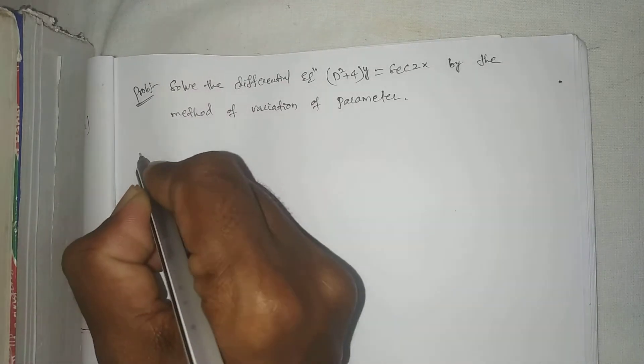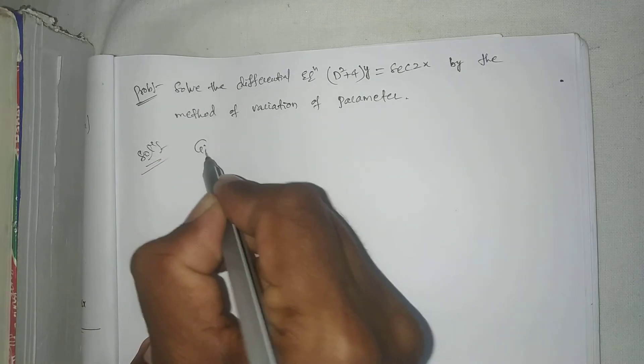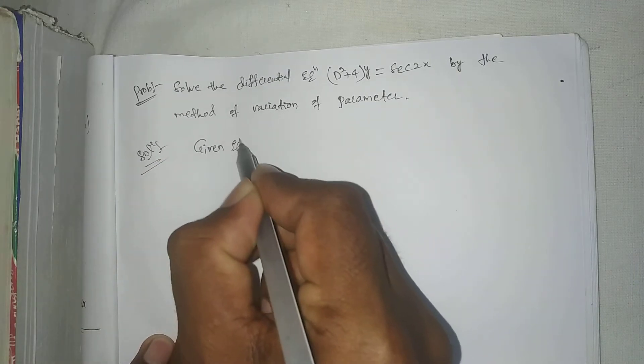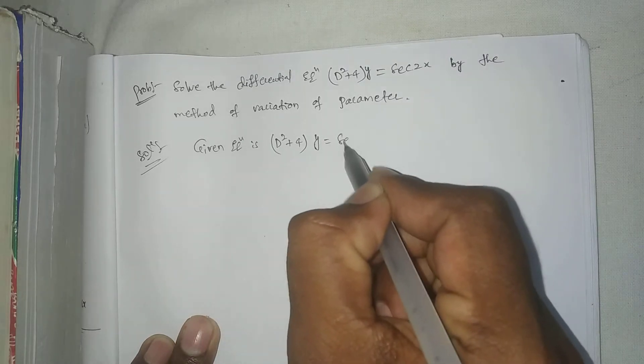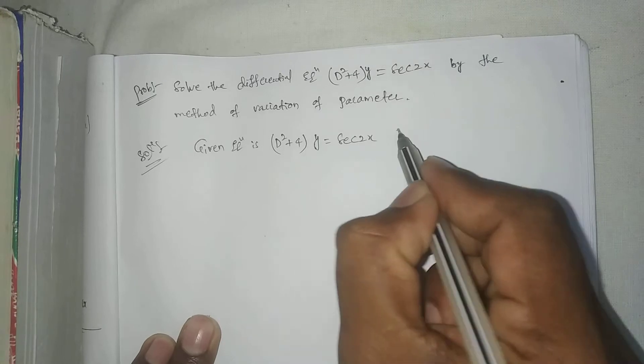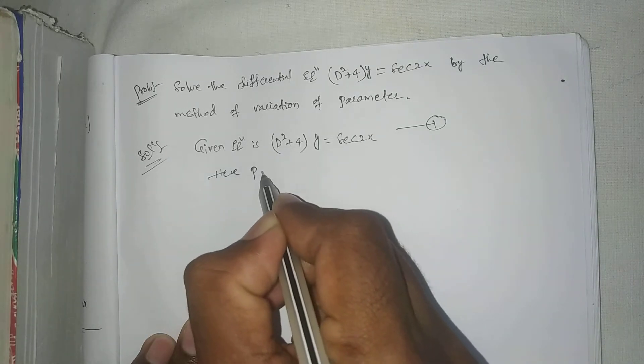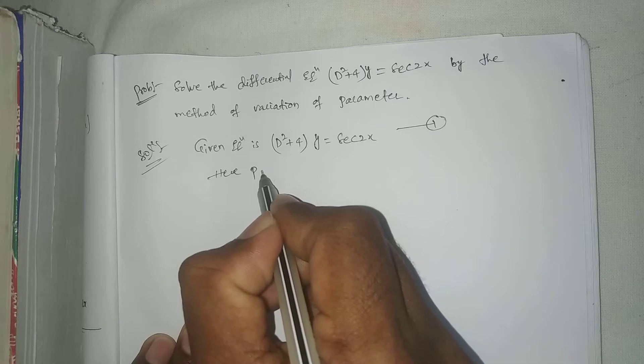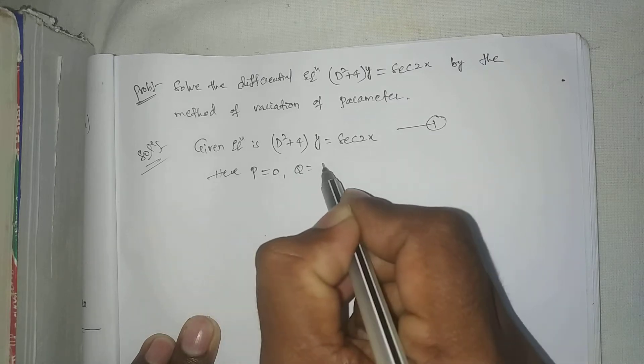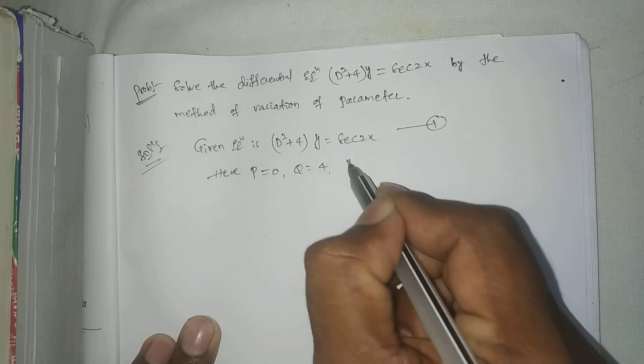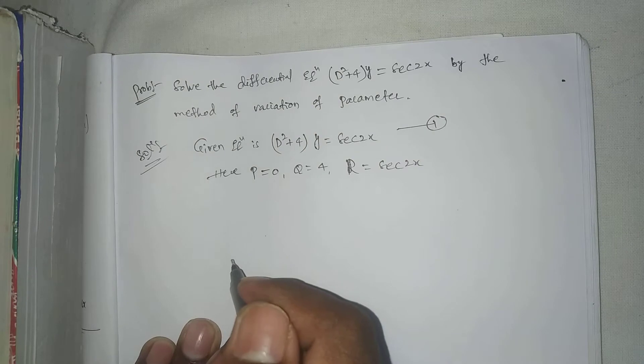Right, solution here. Given equation is d square plus 4 into y equal to secant 2x. Equation 1. Here, comparing the standard form, p equal to 0, q equal to 4, r equal to secant 2x.